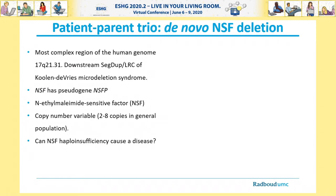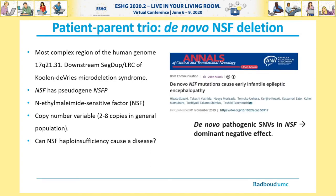The gene disrupted by this de novo deletion is NSF, which is expressed in the brain and is a potentially interesting candidate gene. It has been reported to be copy number variable — two to eight copies in the normal population — but it is still intriguing to speculate whether haploinsufficiency of this gene may be involved in disease. Very recently, a Japanese group published several cases of de novo NSF point mutations causing infantile epileptic encephalopathy, and the authors speculate that these point mutations exert a dominant negative effect.